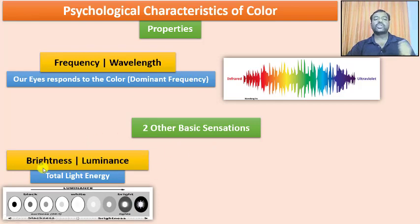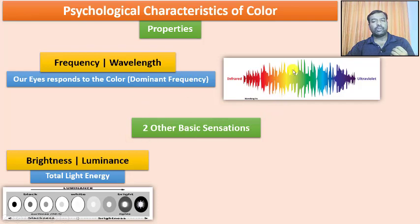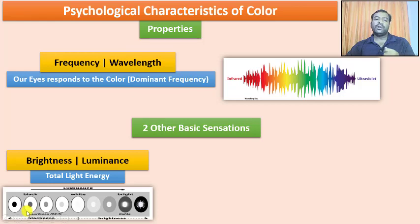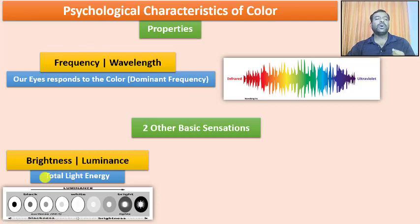The first additional property is brightness, also called luminance — the total light energy. Whatever dominant frequency we have, the intensity of that frequency is what we talk about as brightness. We can have low brightness or high brightness depending upon what energy the dominant frequency emits. That tells us what the brightness or luminance is going to be.